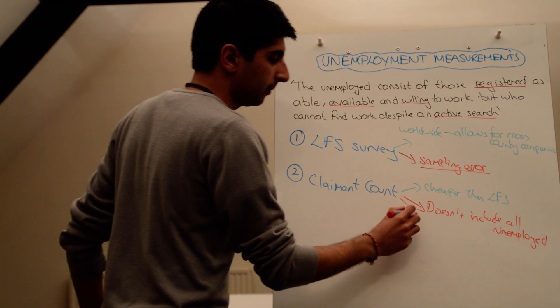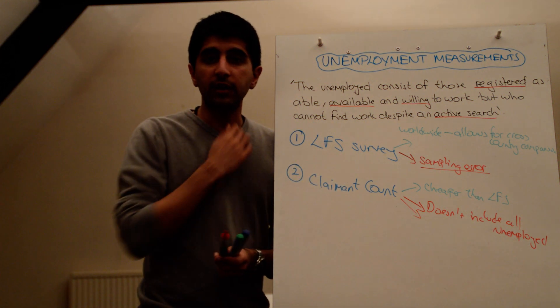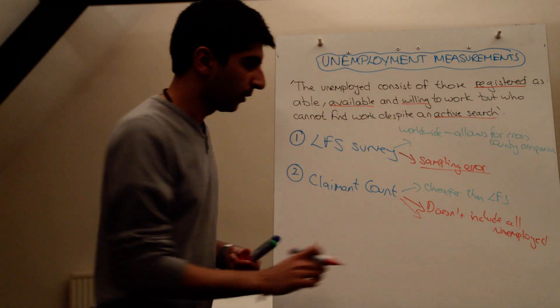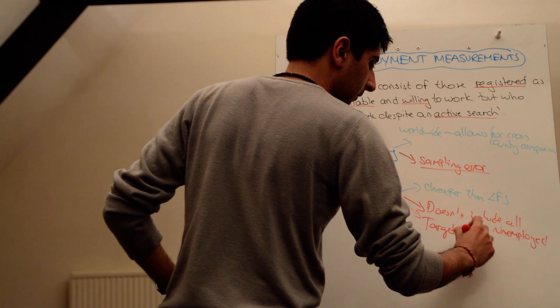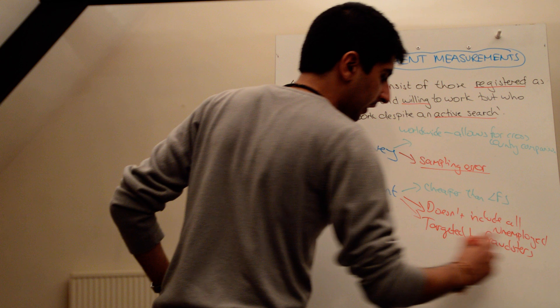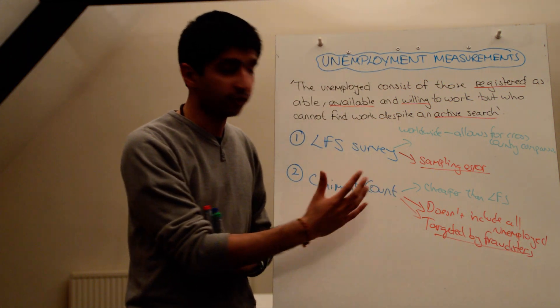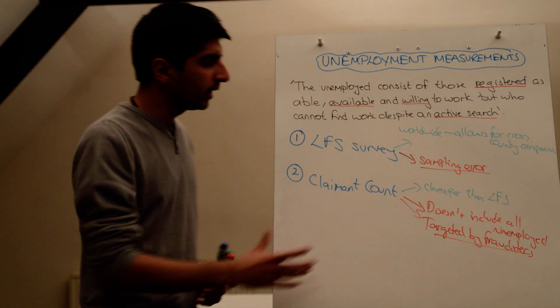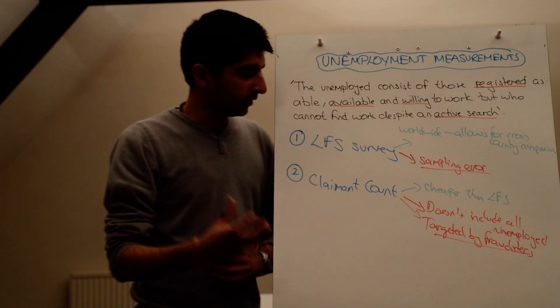And at the same time, the claimant count is potentially there for people to use for fraud reasons. So, it could be targeted by fraudsters. Although, recent evidence suggests that this is actually not that big an issue anymore. But it was certainly in the past that fraudsters would find their way to actually claim job seekers' allowance and skew the data. So, there's the definition. They're the two different main measures you need to know.